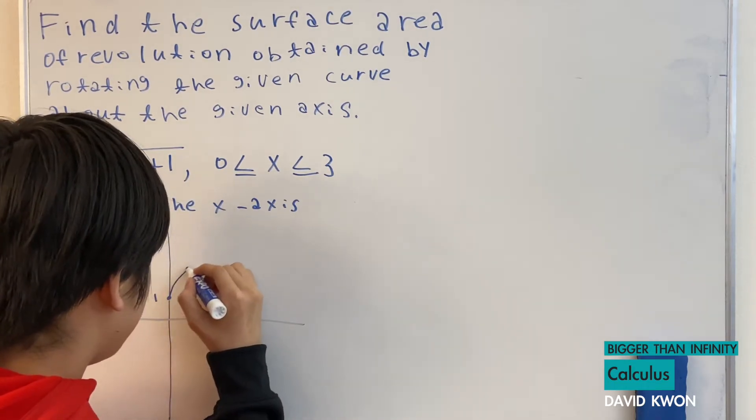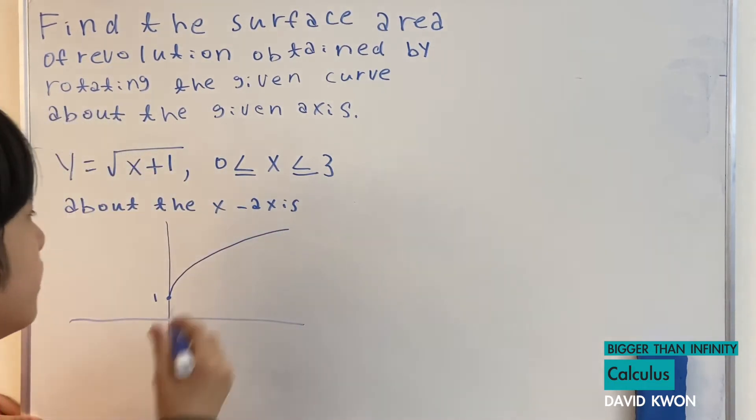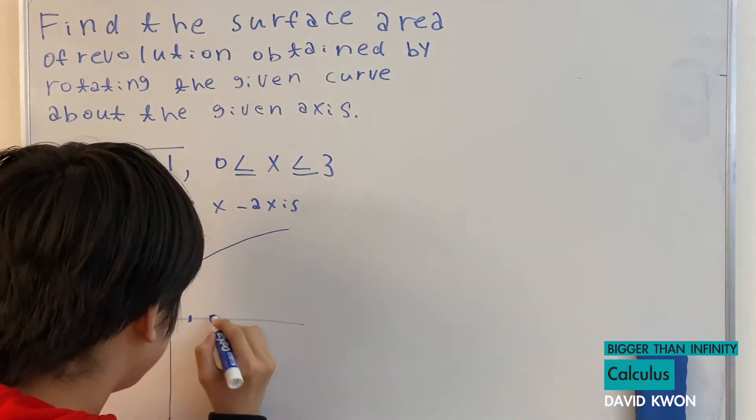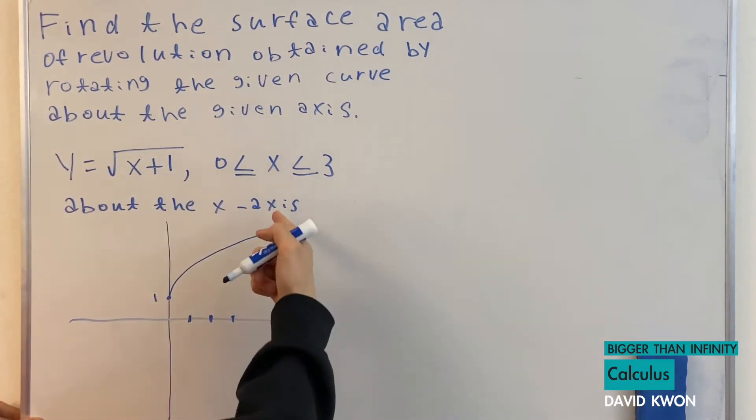The y equals square root of x plus 1 looks like this. When this is 1, it looks like this. This is 0 to 3. So this is 1 to 3, and it spins around the x-axis.